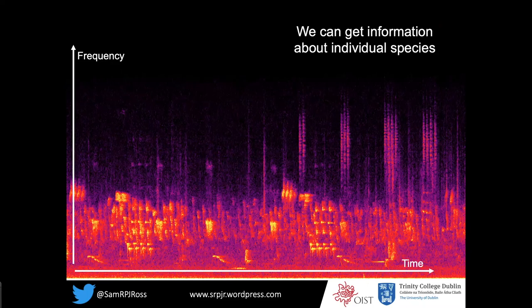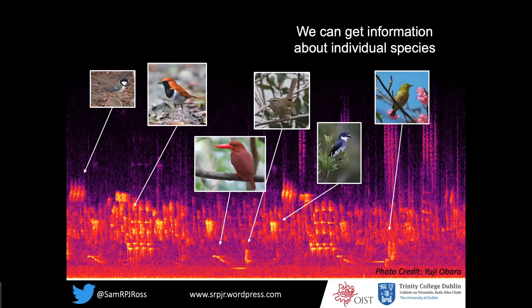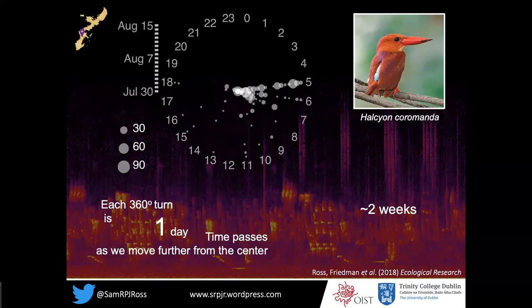We can get ecologically useful information from the soundscape because species signal their presence at a given time and location, and they occupy different frequencies — these so-called acoustic niches. Here are some birds singing at different times and for different durations at different frequencies. And we can use this data to extract information on species dynamics from the soundscape.